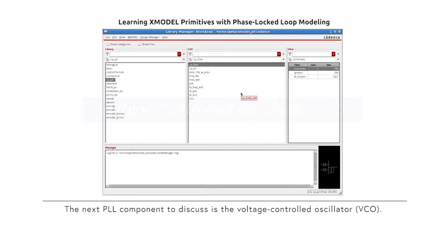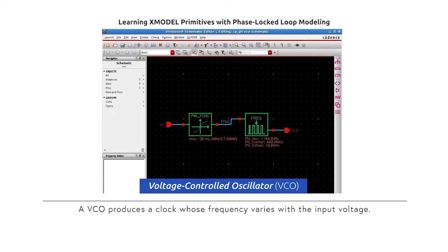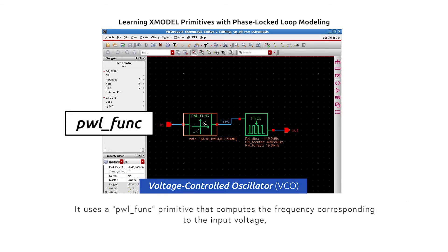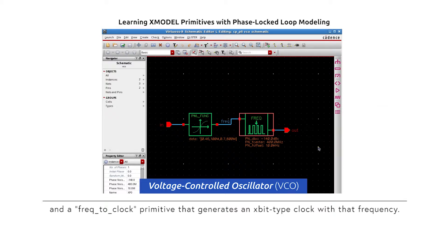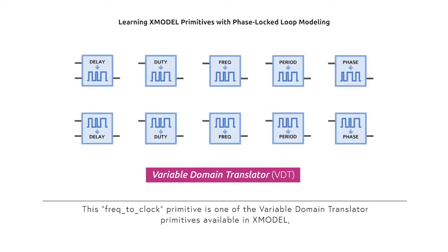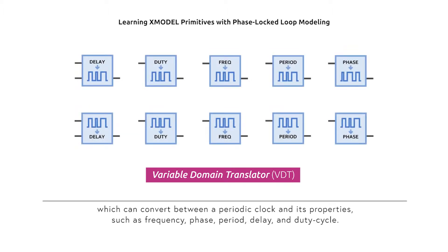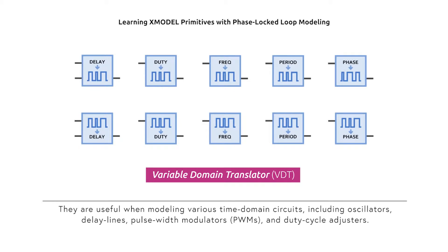The next PLL component to discuss is the voltage-controlled oscillator. A VCO produces a clock whose frequency varies with the input voltage. One way to model a VCO is shown in this VCO schematic. It uses a PWL function primitive that computes the frequency corresponding to the input voltage, and a frequency-to-clock primitive that generates an X-bit type output clock with that frequency. This frequency-to-clock primitive is one of the domain translator primitives available in X-Model, which can convert between a periodic clock and its properties, such as frequency, phase, period, delay, and duty cycle.